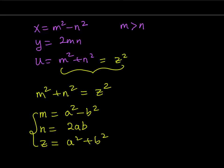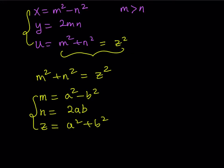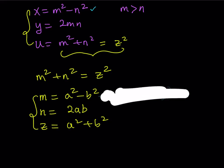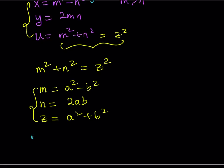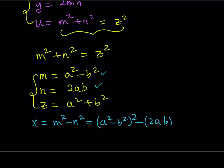So we were able to solve this equation. But our goal is to solve for x, y, z — not m and z. We do have x and y in terms of m and n, so what we can do now is substitute. I'm going to replace m with a squared minus b squared and n with 2ab. So x equals m squared minus n squared becomes: x equals a squared minus b squared, squared, minus 2ab, squared.